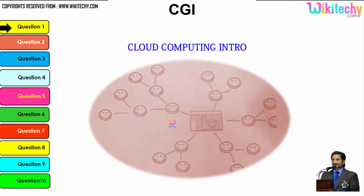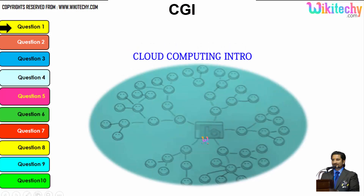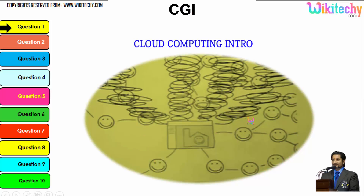Let's talk about the cloud computing intro. Here is a computer connected to a server, and this server is monitoring the computer. Once the network becomes bigger, the monitoring becomes tougher. If more computers are added, the network gets really big and the monitoring system becomes really slow. There is also a possibility that the network crashes or the server couldn't monitor specific parts of the network.